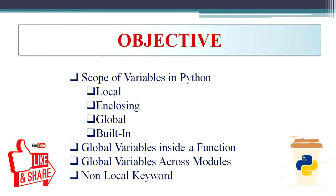Then we move on to discuss the use of global variables inside a function, then global variables across modules, and finally we shall discuss the non-local keyword. So without further delay, let us move on to the discussion on scope of variables in Python.